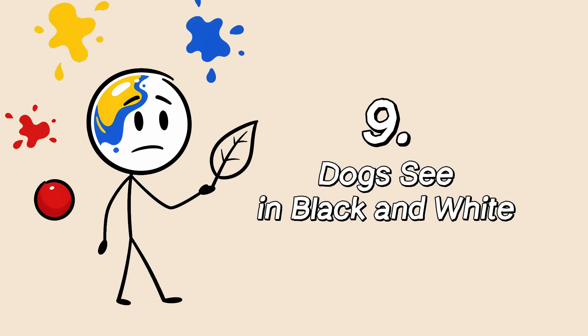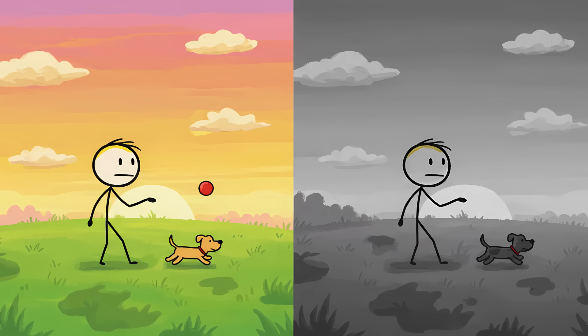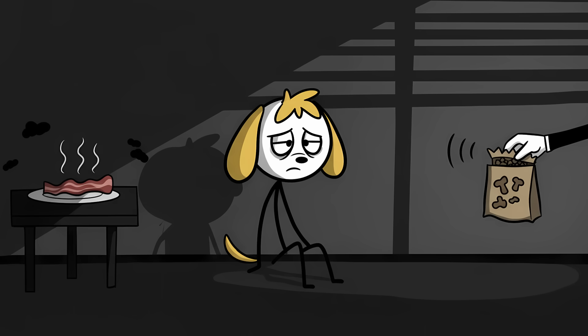Number nine, dogs see in black and white. We love to imagine the world from our dog's perspective. A beautiful, vibrant sunset? To them, it's just another boring gray smear in the sky. That bright red ball you just threw? A dull, muddy blob against a field of slightly different dull, muddy blobs. We've built this entire narrative around our canine companions living in a sad, colorless film noir.